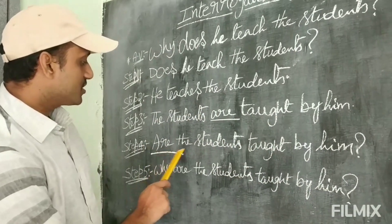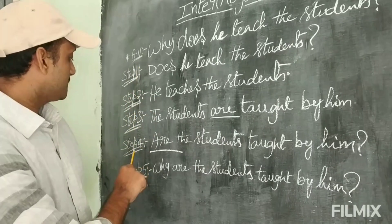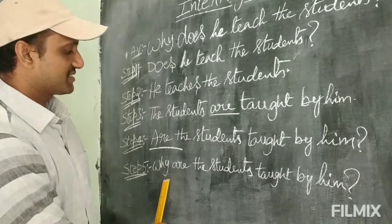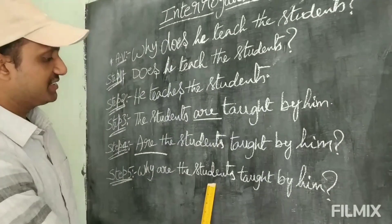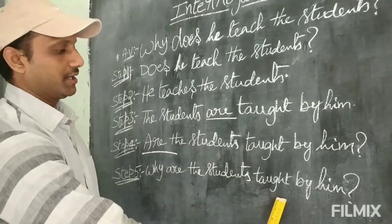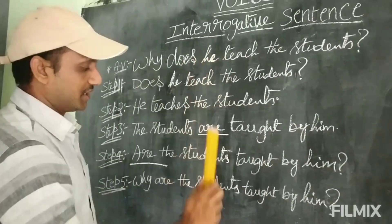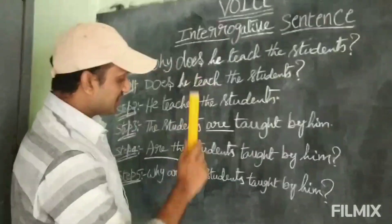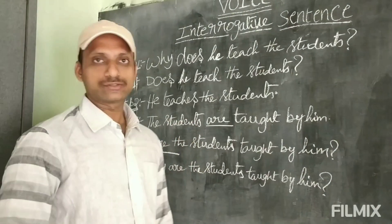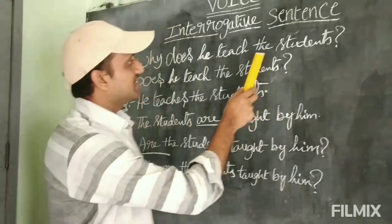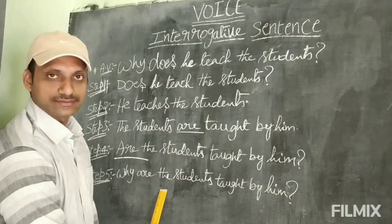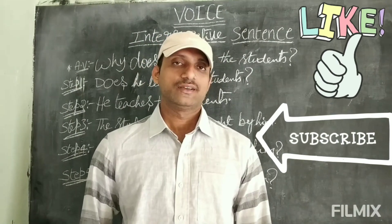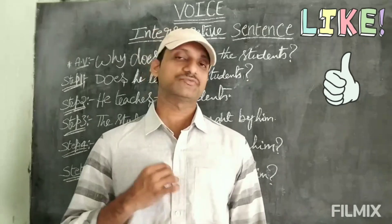After completing the fourth step, the fourth step is the main step. Finally, you have to copy the double H word at the end. So the answer becomes: 'Why are the students taught by him?' This is the answer for this question. If you practice it, simply by seeing the question you can answer directly. It is very easy. Thank you. Please share it with your friends and subscribe to my channel.